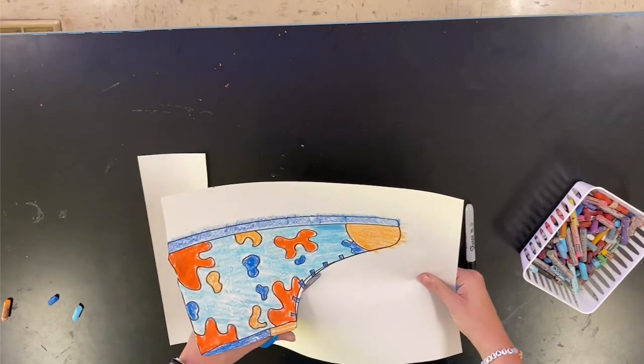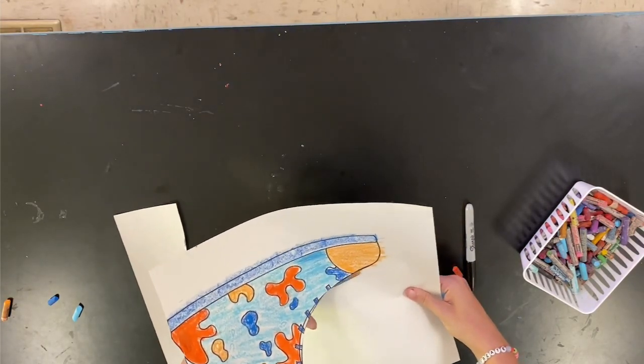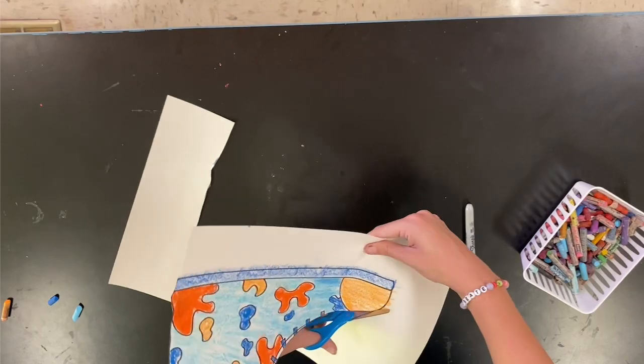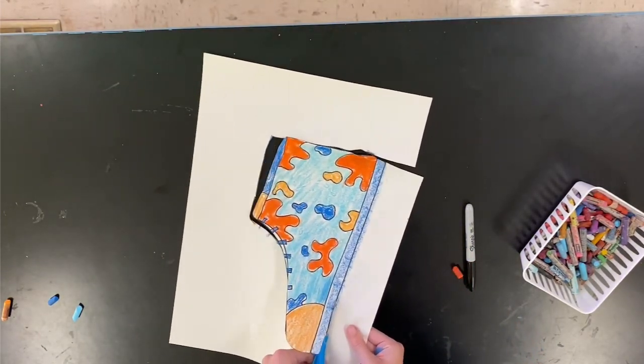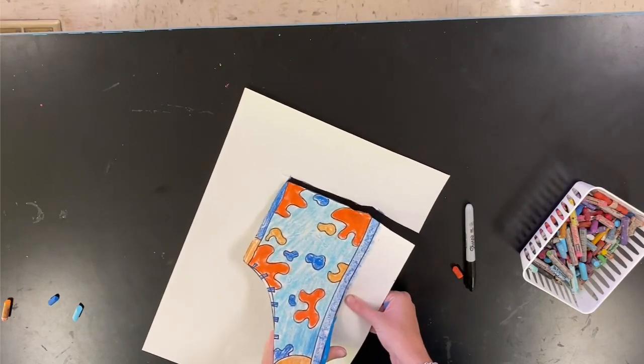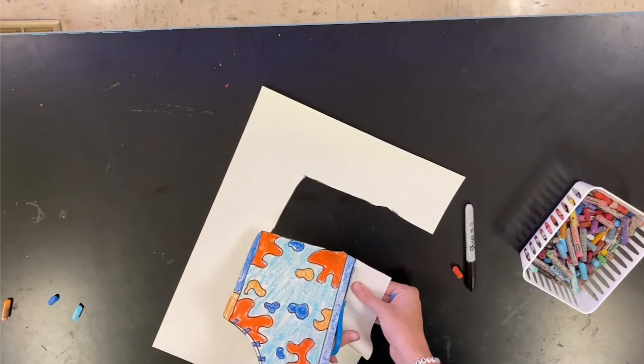Going slow and carefully cutting out my shoe the exact same way that I drew it. And this is why it's okay if you color outside of the edge lines since we are going to cut them out.